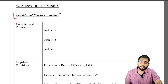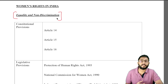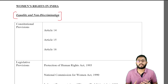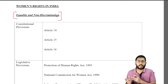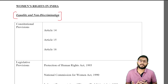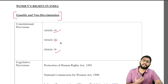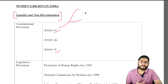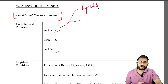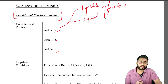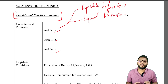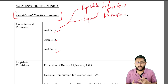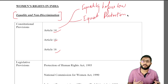Today's first sub-topic is based on women's rights through the lens of equality and non-discrimination. When we talk about equality and non-discrimination, the first thing we have is our right to equality — the constitutional provisions under Article 14. Article 14 very categorically says that the state shall not deny any person equality before law and equal protection of law, which obviously includes women.